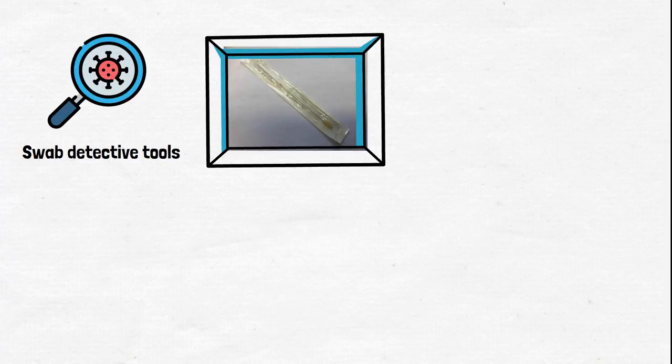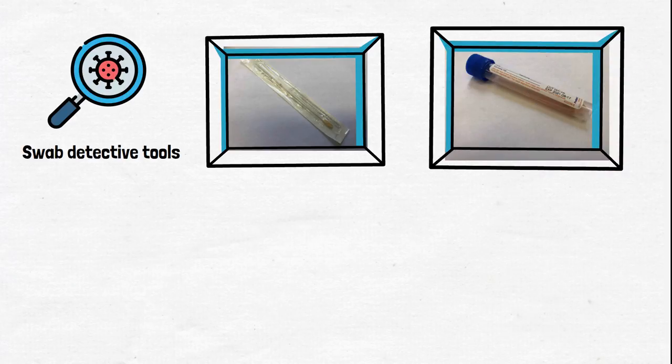You'll need a swab to help us collect clues for COVID-19, a collection tube with clear or pink liquid to help protect the clues on the swab. Remember, it's not for drinking.